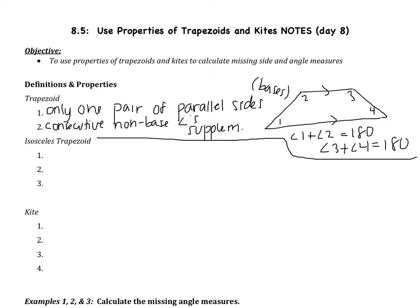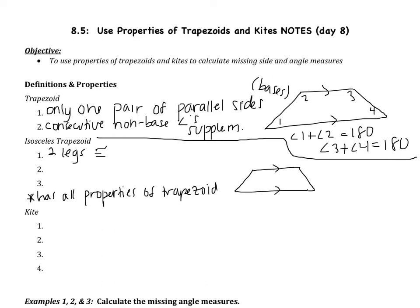Now within the trapezoid family is a figure called an isosceles trapezoid. It has all the properties of a trapezoid, but then it has three more important properties. An isosceles trapezoid has two legs that are congruent — just like an isosceles triangle. Beyond that, the diagonals are congruent, and the base angles are congruent. The consecutive non-base angles are still supplementary as well.